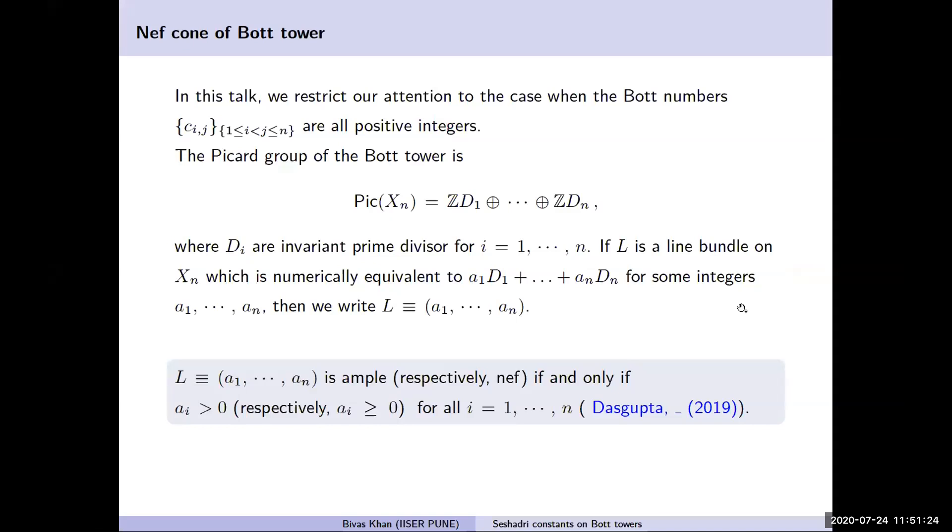So firstly, we compute the nef cone, the cone of nef divisors. We restrict to Bott numbers which are positive. It follows that the Picard group is generated by n divisors D_1 up to D_n. In fact, they are torus invariant prime divisors. If L is a line bundle numerically equivalent to a_1 D_1 plus ... plus a_n D_n, we denote it as a tuple (a_1, ..., a_n). We have found an ampleness criterion which says that L is ample, or respectively nef, if and only if all of these integers are positive, or non-negative. Having found the nef cone, next we compute the Mori cone, which is the cone of curves. We use the fact that the Mori cone is dual to the nef cone.